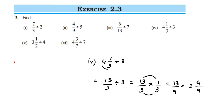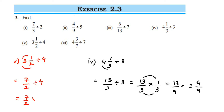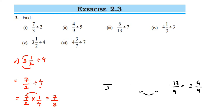Fifth question: 3 and 1/2 divided by 4. Convert to improper fraction: 2 × 3 = 6, plus 1 = 7, so 7/2 divided by 4. The first number 7/2 remains the same, division becomes multiplication, and the reciprocal of 4 is 1/4. Multiply: 7 × 1 = 7 and 2 × 4 = 8, so 7/8. This is a proper fraction, so no conversion needed.